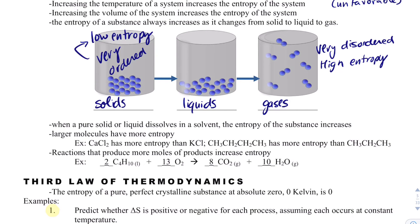Larger molecules also have more entropy. For example, if we compare calcium, calcium chloride has two more chlorines so it'll have more entropy. And if we look at this hydrocarbon, it's a little bit bigger or longer than this other one, so therefore it's going to have more entropy. This will be more entropic, and this would also be more entropic.